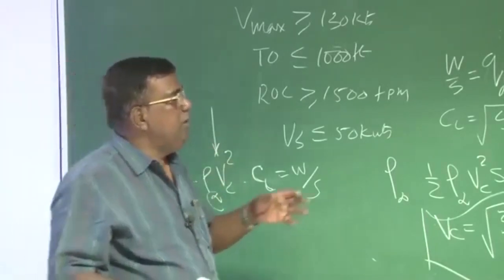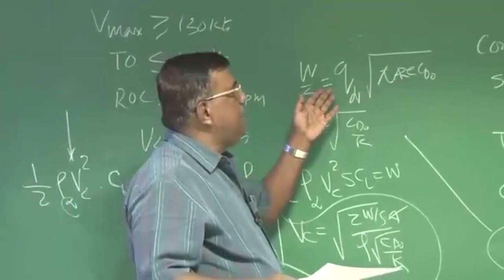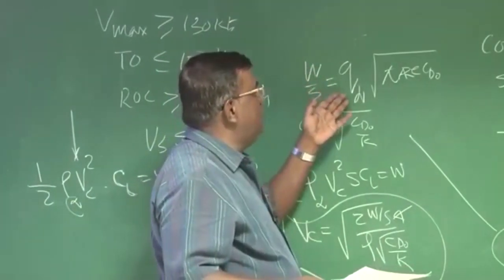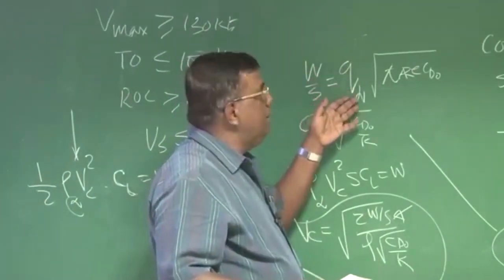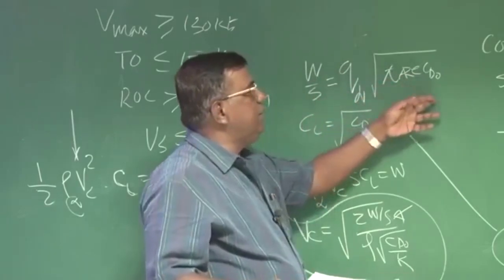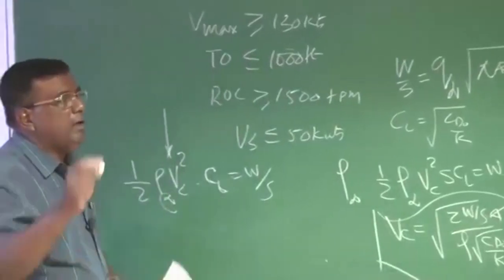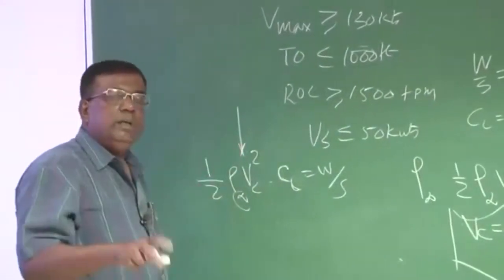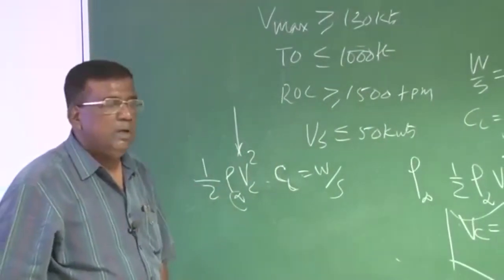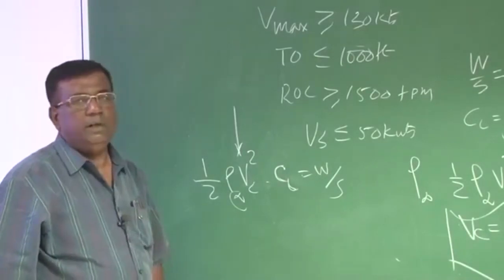For example, if I want to create a database, I will create a database for W by S for different dynamic pressure, different aspect ratio, different CD naught. All those should be available with me. So whenever crisis is there, I can pick up them and use a linear interpolation method to get my configuration.